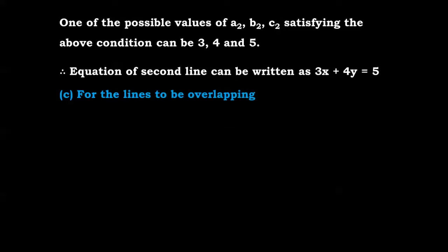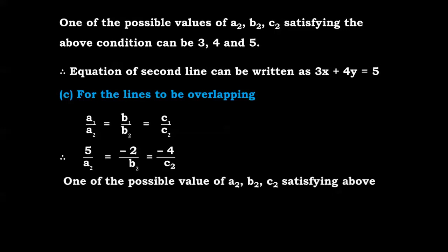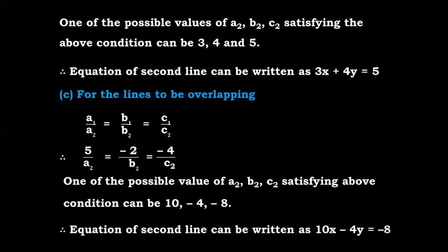For the lines to be overlapping, that is coincident lines, the condition is a1/a2 = b1/b2 = c1/c2, giving 5/a2 = -2/b2 = -4/c2. All ratios must be equal, so we take values proportional to the numerators. One possible set is a2 = 10, b2 = -4, c2 = -8, so all ratios equal 1/2. The equation of the second line is 10x - 4y = -8.